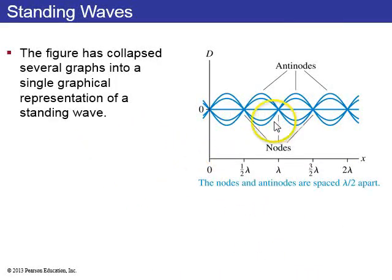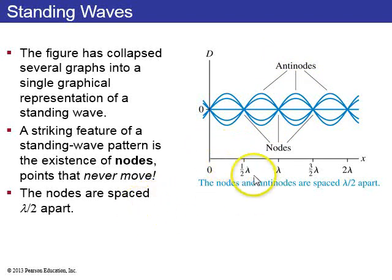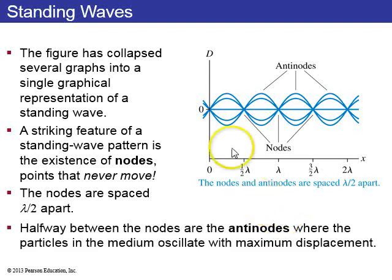And here, this figure has collapsed several graphs at different instances of time to sort of show, on a piece of paper, without an animation, a standing wave. Here's the nodes where things don't move, and here are the anti-nodes where it's going up and down. The nodes are spaced each half a wavelength apart, and halfway between the nodes are the anti-nodes, where the particles in the medium oscillate with their maximum displacement.